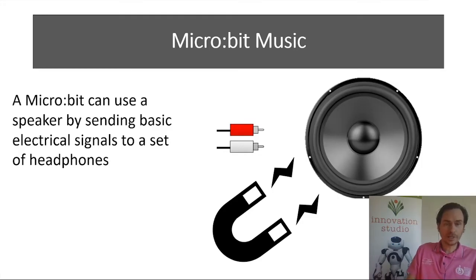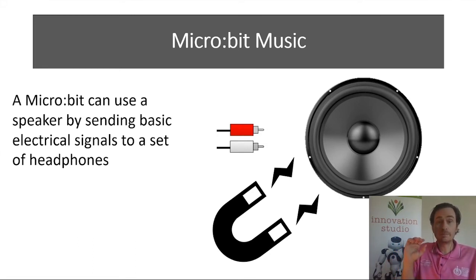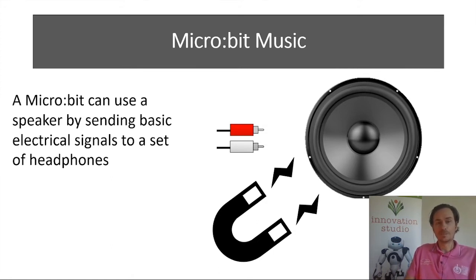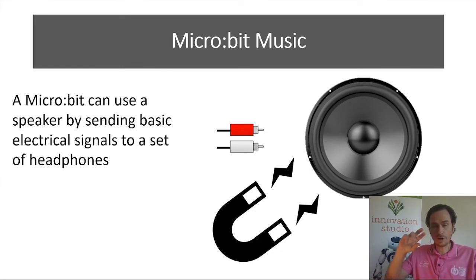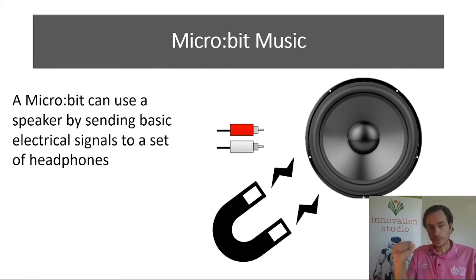A microbit can use a speaker by sending basic electric signals to play basic notes. It doesn't sound like regular songs or anything — it's just basic tones like the old mobile phones. Without getting into too much detail about how speakers work using magnets and electricity, by changing the frequency — the amount of time between switching the magnets from positive to negative — it can cause vibrations on the speaker or headphone. Depending on the speed of that vibration, it can change the tone.